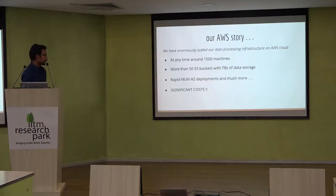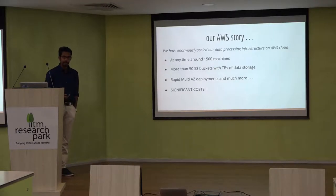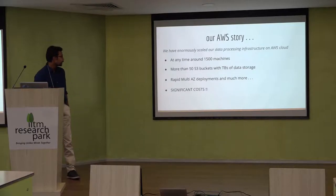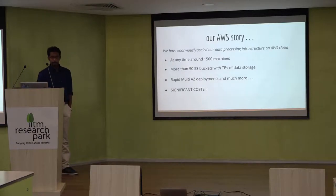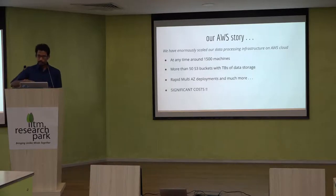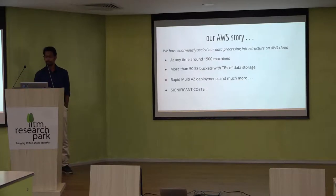Before we jump ahead, let's have a brief look at how our AWS infrastructure currently looks. At any given time, we are approximately close to 1500 machines, including on-demand, spot nodes, as well as Reserved Instances. We have more than 50 to 60 S3 buckets with terabytes of data, actively handling data processing jobs at large scale. We have rapid multi-AZ deployments done at every given hour of the day. Since we are a mid-level startup, every penny we spend on AWS matters, so we incur a significant cost and must take strict measures to control it.